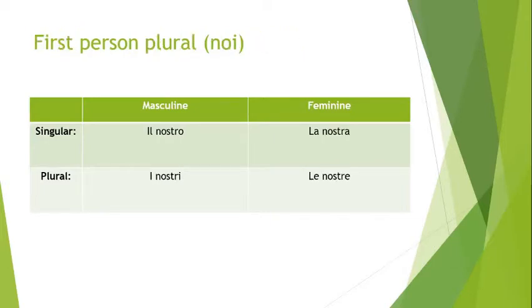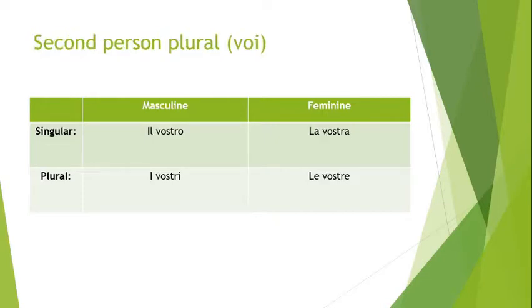Now for the plurals. 'Noi' becomes il nostro, la nostra, i nostri, le nostre. You might remember 'cosa nostra' from mafia movies — 'our thing.' For second person plural 'voi,' it's exactly the same but the 'n' becomes a 'v': il vostro, la vostra, i vostri, le vostre.